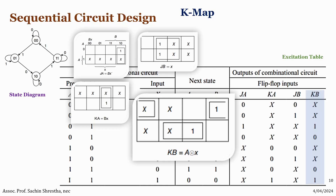For KB: analyzing the K-map gives two groupings. One group yields Ā·X̄ and the other yields A·X, so KB equals Ā·X̄ plus A·X, which is the XNOR of A and X.